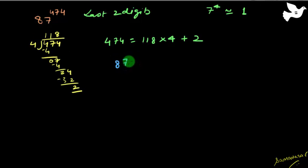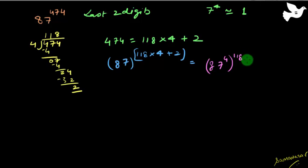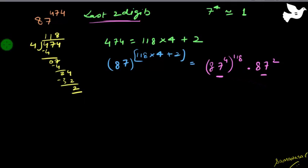So we write the exponent as 118 × 4 + 2. This gives us 87 raised to the power (118 × 4 + 2), which expands to: 87^4 raised to the power 118, multiplied by 87 raised to the power 2. When finding the last 2 digits of this expression, it's the last 2 digits of the first part multiplied by the last 2 digits of the second part.